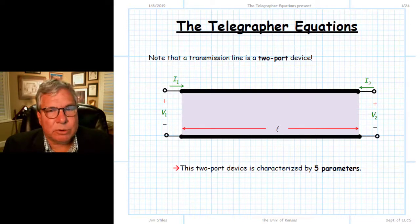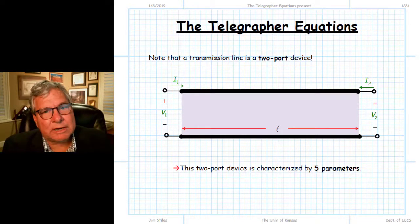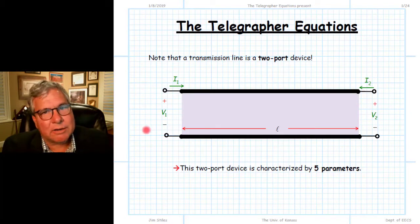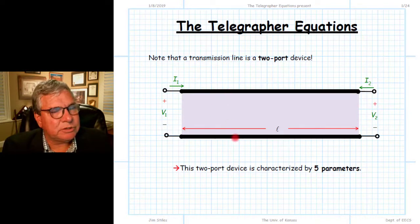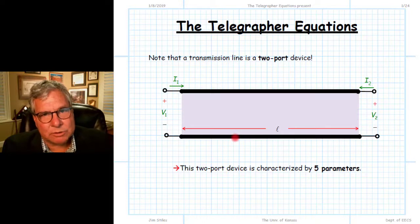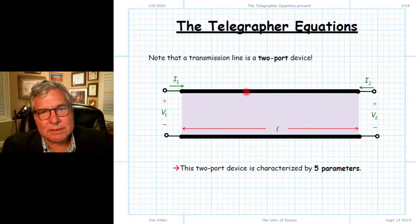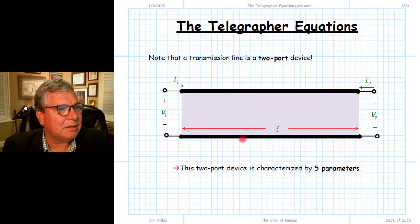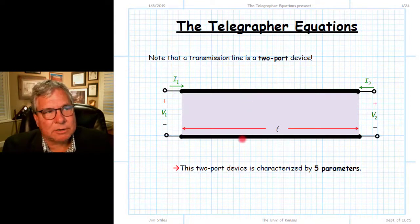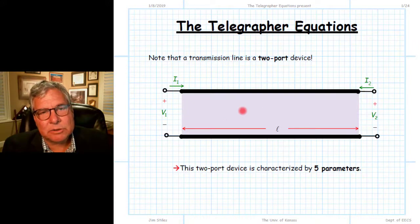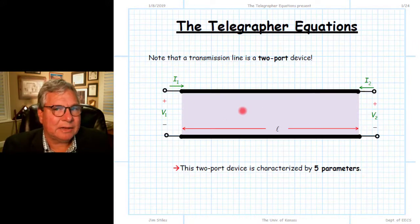The circuit diagram we'll use for a transmission line is very literal and physical. There are two black lines which correspond to the two wires, the two conductors — the top side conductor and the bottom side conductor. The region in the middle corresponds to and indicates the dielectric that separates these two wires.